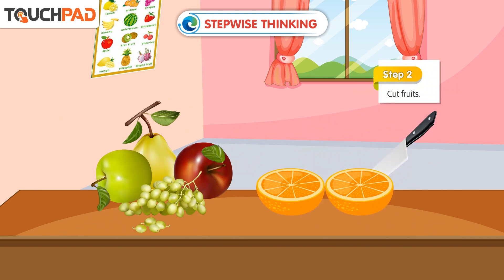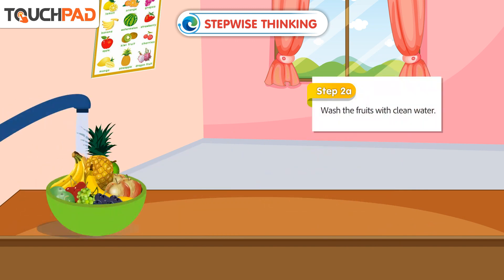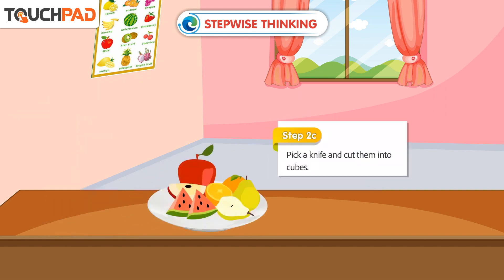Step 2: Cut fruits. Step 2a: Wash the fruits with clean water. Step 2b: Peel the fruits if you want to. Step 2c: Pick a knife and cut them into cubes.